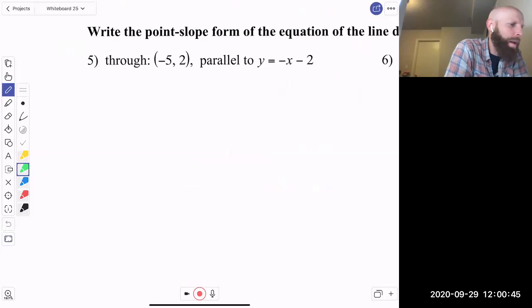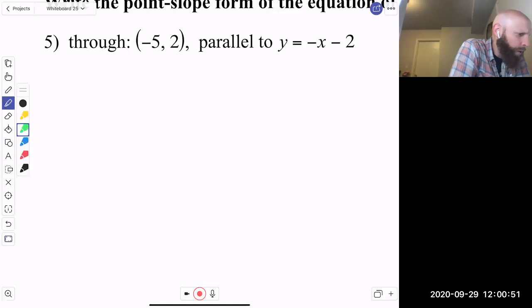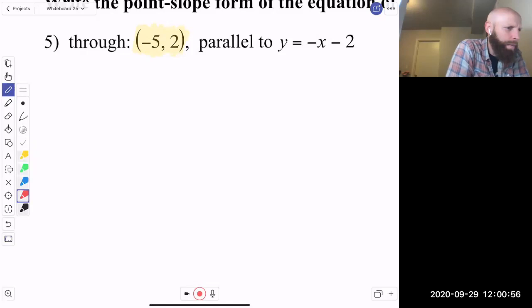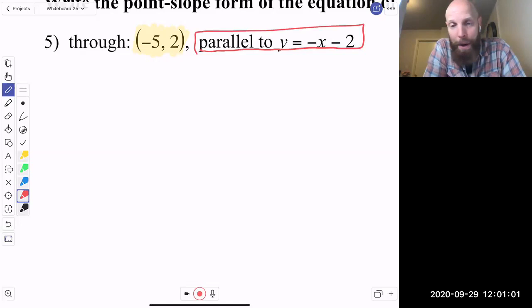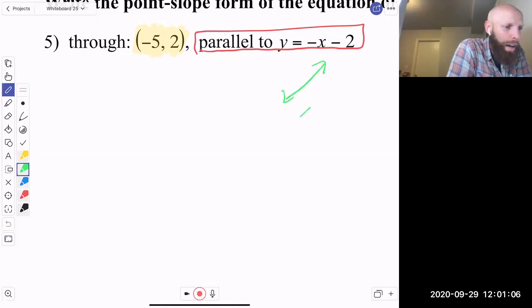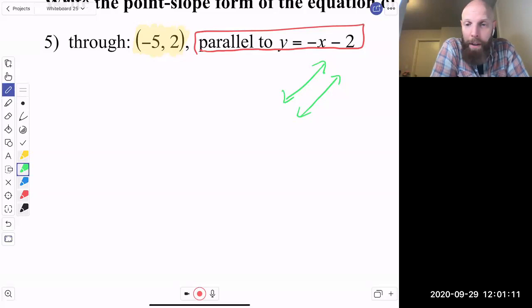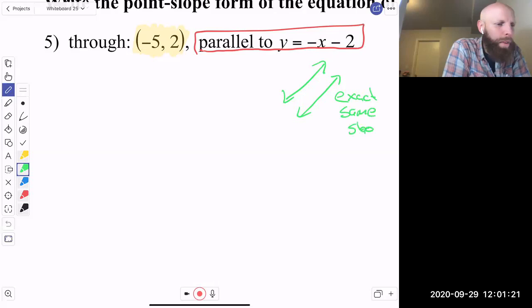All right, let's do this one. Point-slope form in the equation line describe. So they give me a point. They want me to go through this point, negative 5, 2. But check this, be parallel to this. Geometry term: parallel. What does parallel mean? If we do a real quick recap, remember parallel means if I draw a line and then I draw another line, they never cross. Ever. Parallel, like train tracks, never cross. So what is true about them? They have the exact same slope.